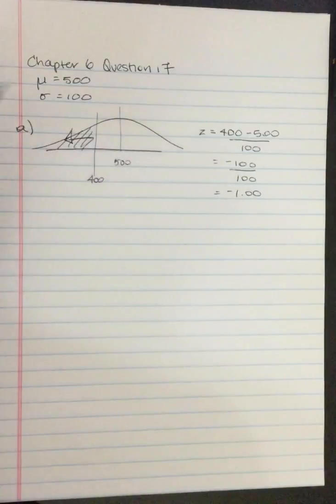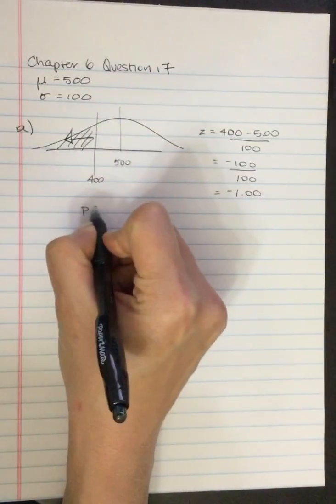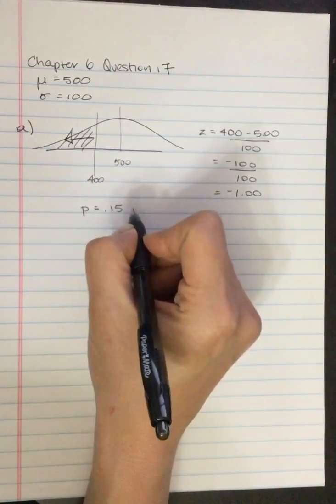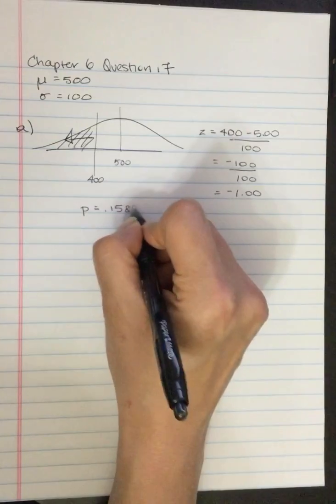Now we're going to go to the unit normal table. We're going to look up 1.00. We're looking for the proportion in the tail, and that probability, that proportion, those terms are interchangeable here, 0.1587.